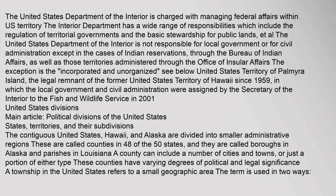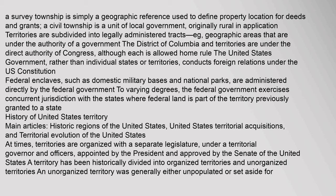The contiguous United States, Hawaii, and Alaska are divided into smaller administrative regions. These are called counties in 48 of the 50 states, and they are called boroughs in Alaska and parishes in Louisiana. A county can include a number of cities and towns, or just a portion of either type. A survey township in the United States refers to a small geographic area used in two ways: as a geographic reference to define property location for deeds and grants, and as a civil township, which is a unit of local government. Territories are subdivided into legally administered tracts — geographic areas that are under the authority of a government. The District of Columbia and territories are under the direct authority of Congress, although each is allowed home rule.